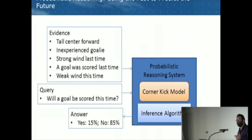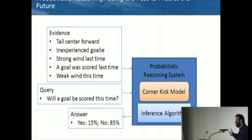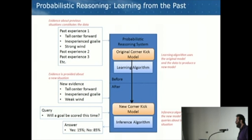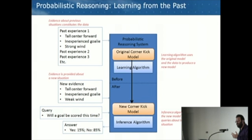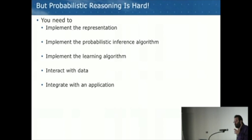Fast-forward another 20 minutes, there's another corner kick. Again, a tall center forward and inexperienced goalie. You know a goal was scored last time, but this time the wind is weak. You ask the query again — will a goal be scored? — and you can use your previous experience to help answer this query better. And you can generalize: what if you have a whole season's worth of corner kicks to learn from? You can take your original corner kick model and improve it to predict better in the next season.